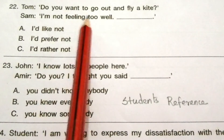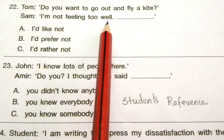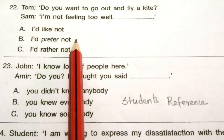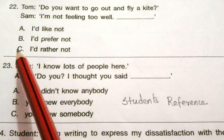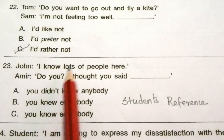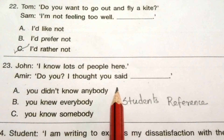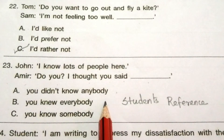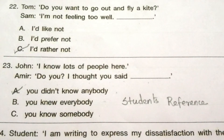Question 22: Tom says 'Do you want to go out and fly a kite?' Sam replies 'I am not feeling too well, ___.' Options: A) I would like not, B) I would prefer not, C) I would rather not. The answer is C — I would rather not. Question 23: John says 'I know lots of people here.' Amir replies 'Do you? I thought you said ___.' Options: A) you didn't know anybody, B) you knew everybody, C) you know somebody. The answer is A — you didn't know anybody.